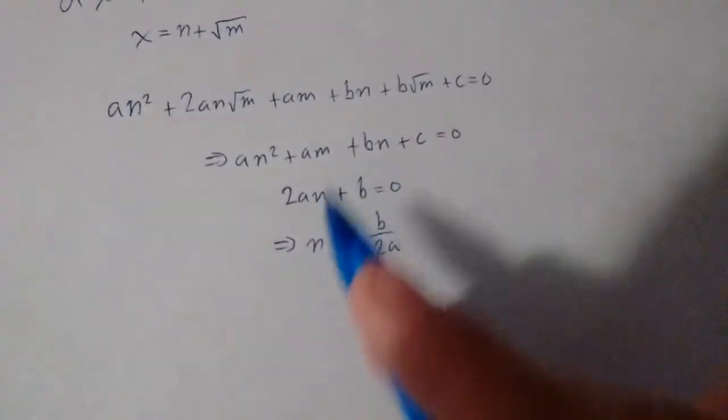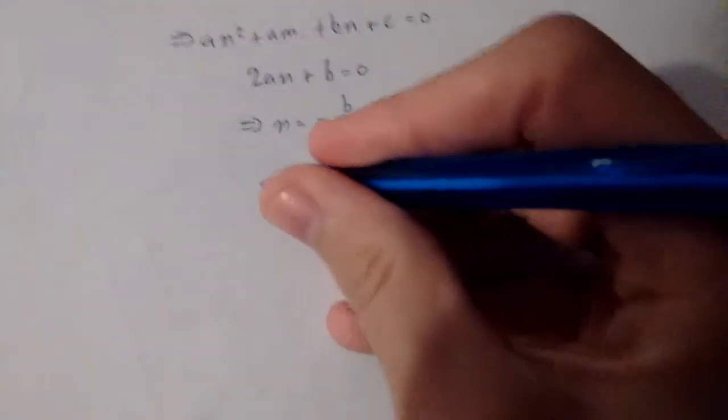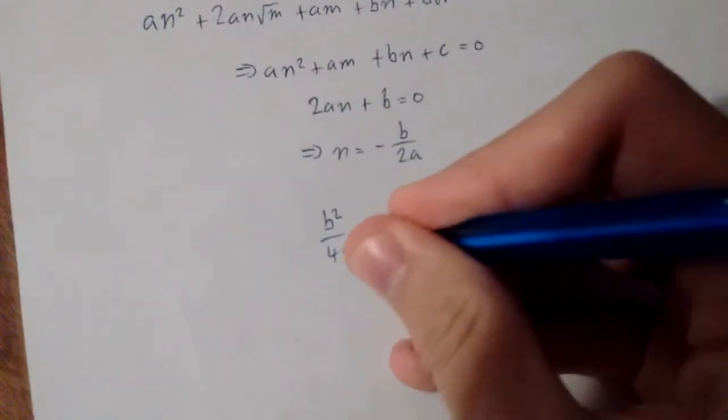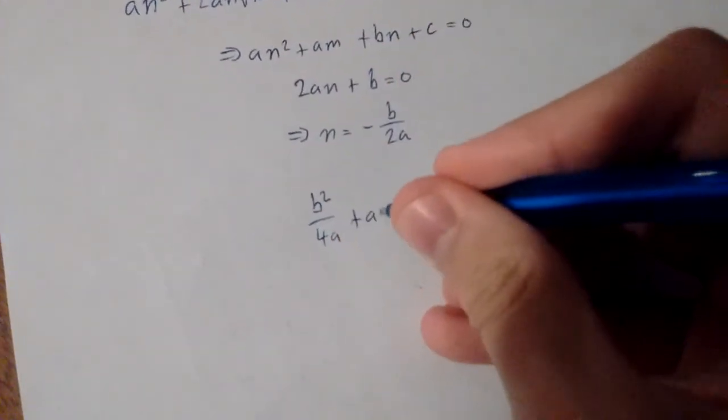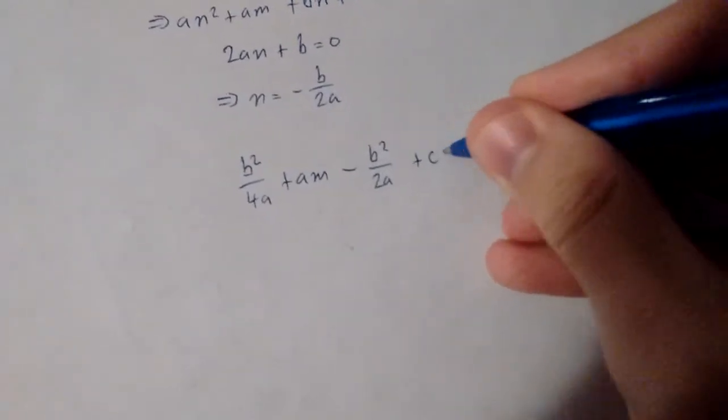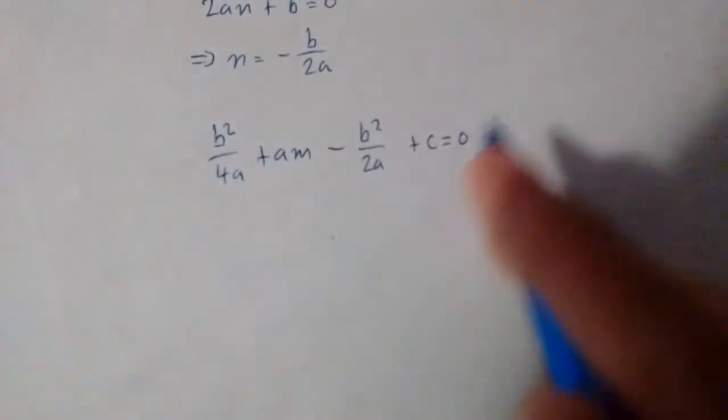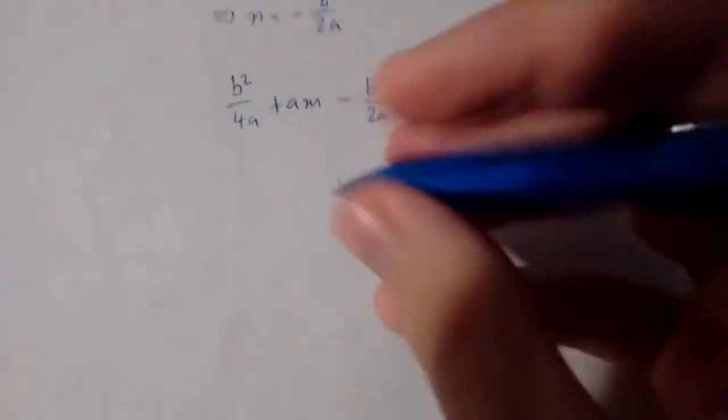And then we can substitute what we got here into the first equation. We get b squared over 4 a plus a m minus b squared over 2 a plus c equals 0. We can rearrange all the terms so only a m is on the left side.